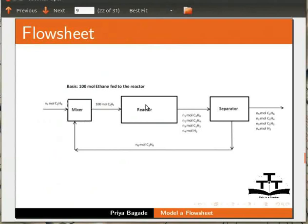As you can see, there is one stream entering the reactor and four streams leaving it. Here ethane is dehydrogenated to ethylene and acetylene. So the out stream consists of ethane, ethylene, acetylene, and hydrogen.